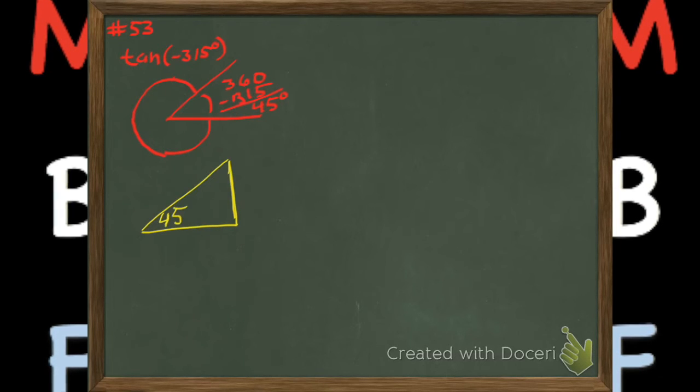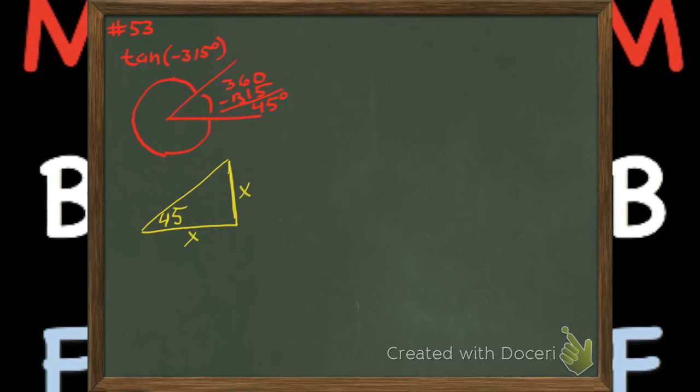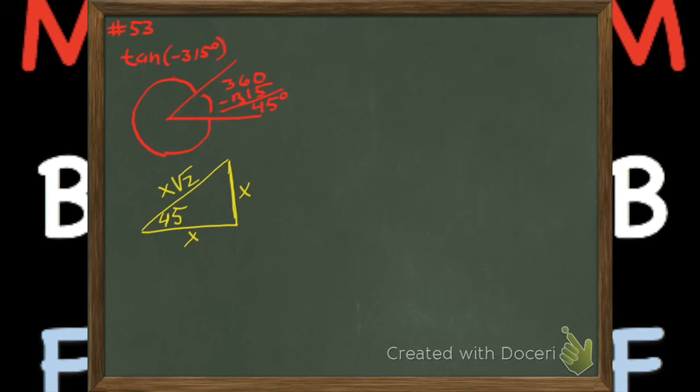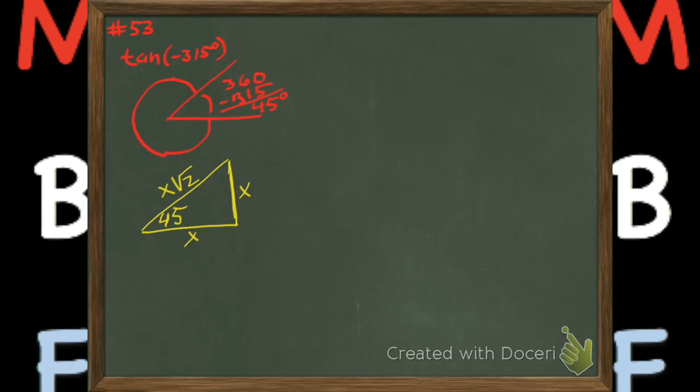We refer to our reference triangle and put the 45 degree angle in there. That's special - that's the 45-45-90 triangle, which has the ratio of sides like this.